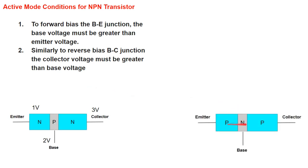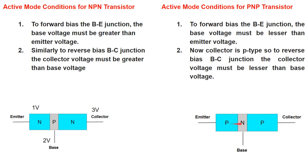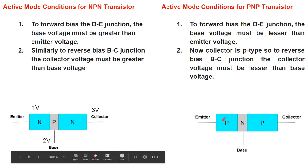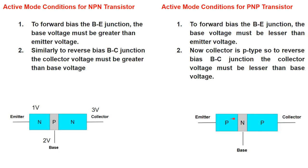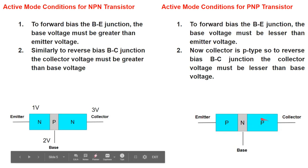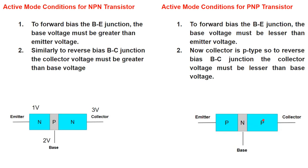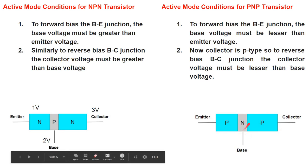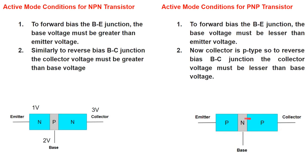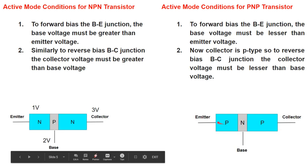For the PNP transistor, the P side should be at higher potential and N side should be at lower potential, then this junction will be forward biased. And definitely to reverse bias the other junction, the collector should be at lower potential as compared to the base, then this junction will be reverse biased. Then the PNP transistor is in the active mode condition.